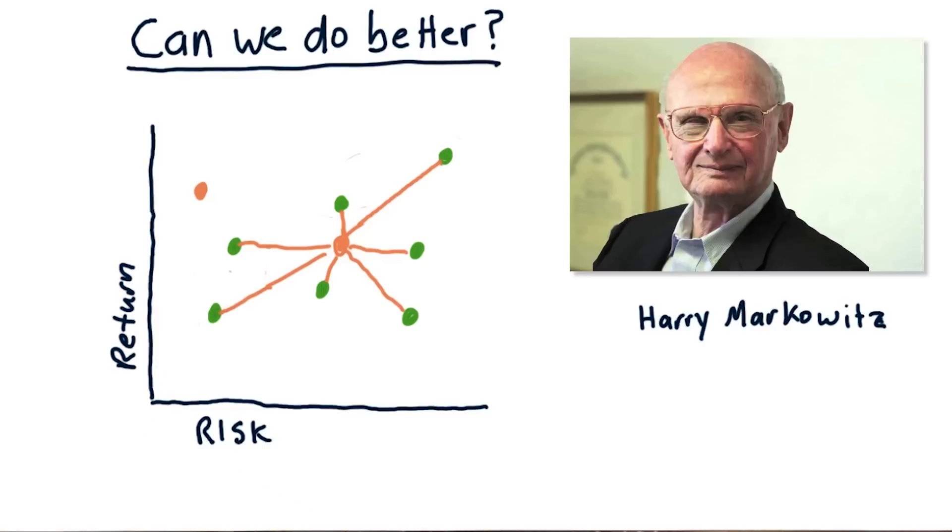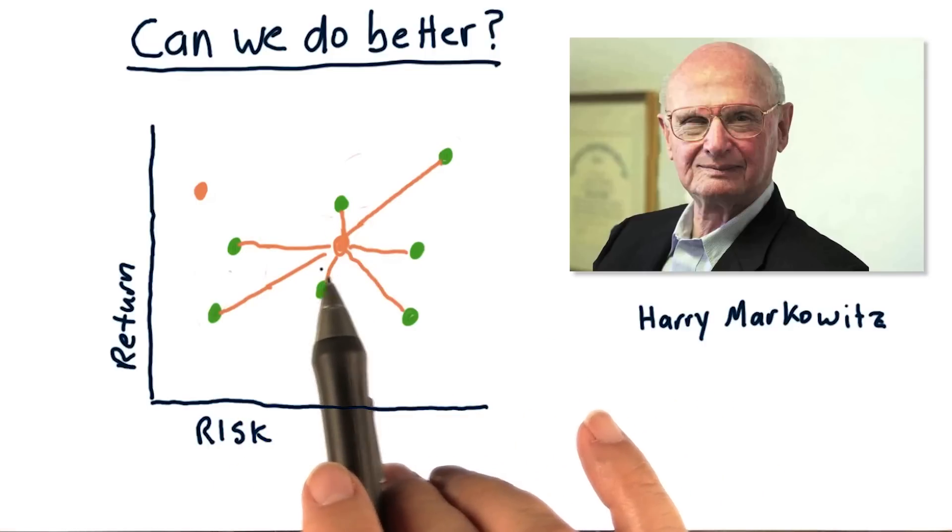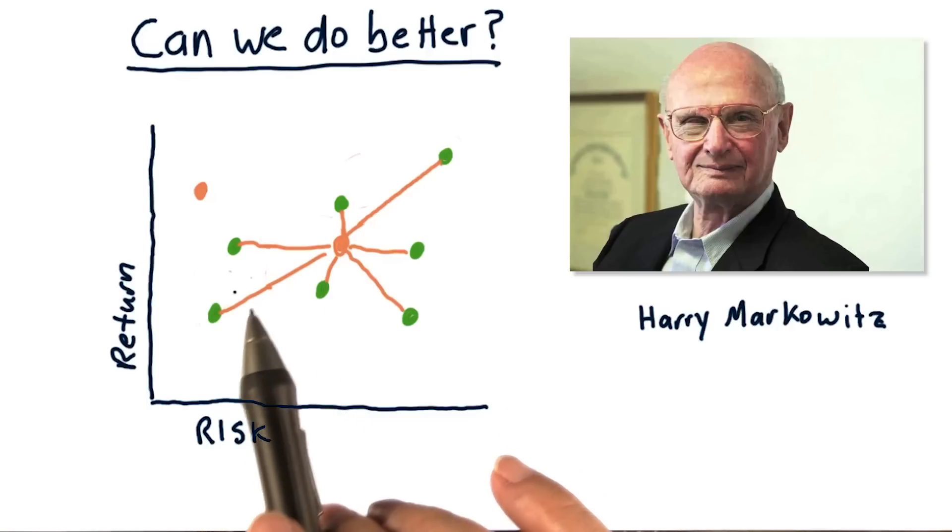What he discovered, and what people had been overlooking, was the relationship between stocks in terms of covariance. So the resulting performance of a portfolio, especially in terms of risk, is not just a factor or a blend of the various risks.